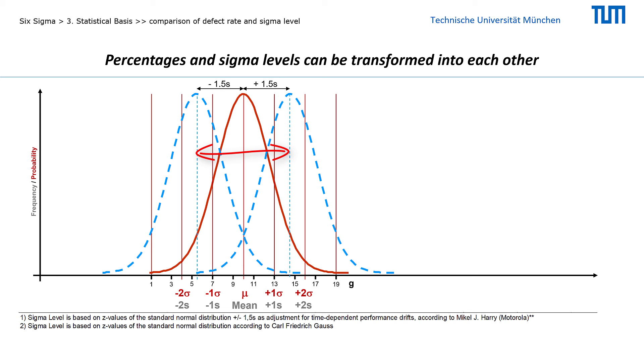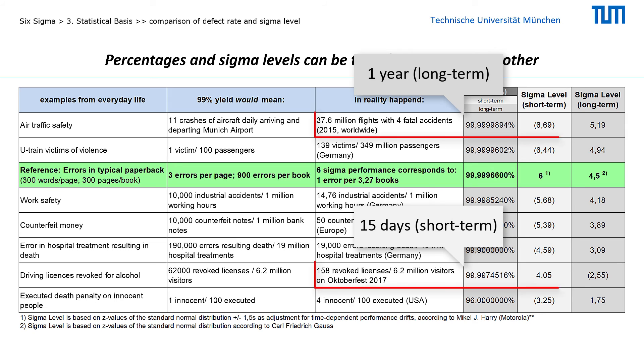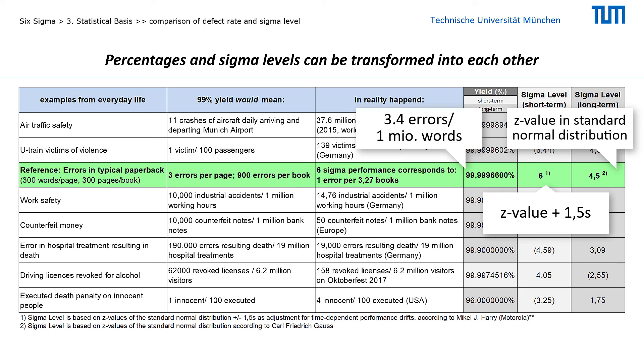This increases the variability of the data and reduces the sigma level. Michael Harry, the architect of six sigma at Motorola, introduced appropriate adjustments to the sigma levels by distinguishing between measurements over a short versus a long time interval. The assignment to long-term versus short-term depends on the actual drift of the measured values over time. The 3.4 ppm from the standard example of Motorola corresponds to a z-value of 4.5 in the standard normal distribution according to Carl Friedrich Gauss. Michael Harry suggests maintaining this level of 4.5 sigma if data are based on long-term measurements. However, if this data is to be compared with data from a short-term interval, then 1.5 standard deviations is added. Thus, the 3.4 ppm corresponds to 6 sigma for short-term and 4.5 sigma for long-term measurements.